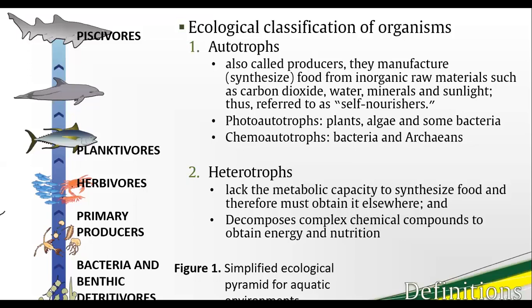Let us now proceed to the ecological classification of organisms in aquatic environments — this is a review of biology. Figure 1 identifies the orders of organisms in the food chain or web, beginning from the decomposers, bacteria, and detritivores at the bottom, to the primary producers above, then the herbivores that feed on primary producers, the planktivores which eat plankton as secondary consumers, and last the piscivores which eat other fishes. Figure 1 can be further simplified with the autotroph and heterotroph classification. Autotrophs produce or manufacture their own food and can metabolize from inorganic sources. Autotrophs can be photoautotrophs or chemoautotrophs — photo relating to light and chemo relating to chemicals.